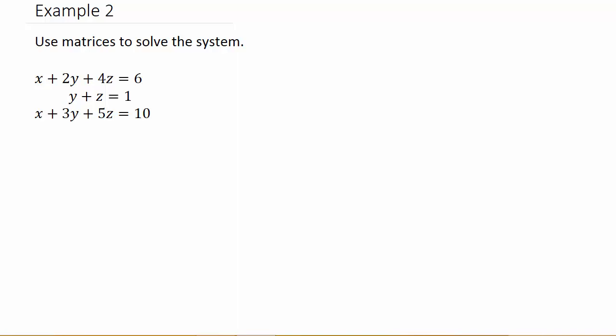Alright, so let's get started. The first thing that we want to do is rewrite this system as an augmented matrix. So if we write it as a matrix, we've got 1, 2, 4, 0, 1, 1, 1, 3, 5.